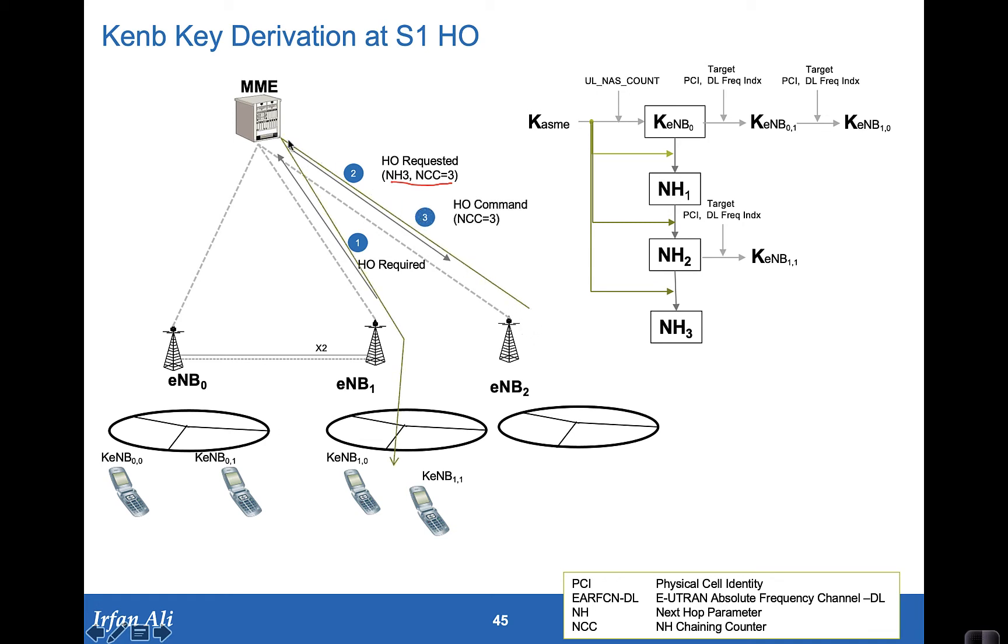The E-node B sends a handover command which gets relayed via the MME back through the E-node B1 to the mobile. And that handover command essentially says that NCC 3 is going to be used.